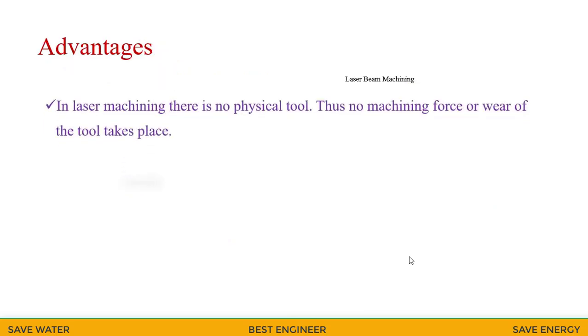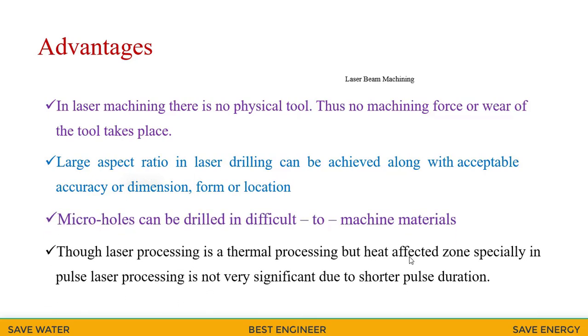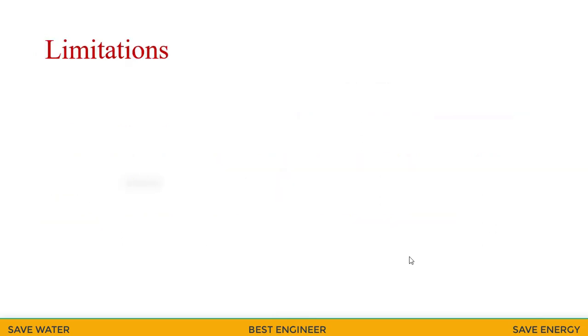In laser machining, there is no physical tool. Large aspect ratio in drilling can be achieved along with acceptable accuracy or dimensions. Micro-sized holes can be drilled. Though laser processing is a thermal processing, heat affected zone, especially in pulse laser processing is not very significant due to the shorter pulse duration.